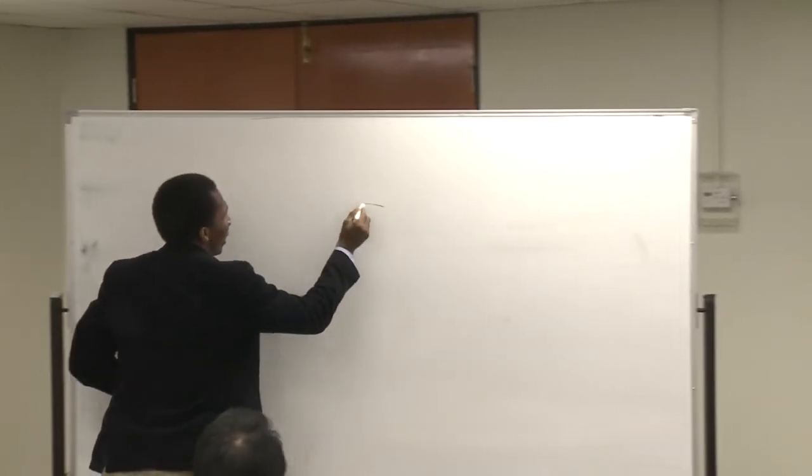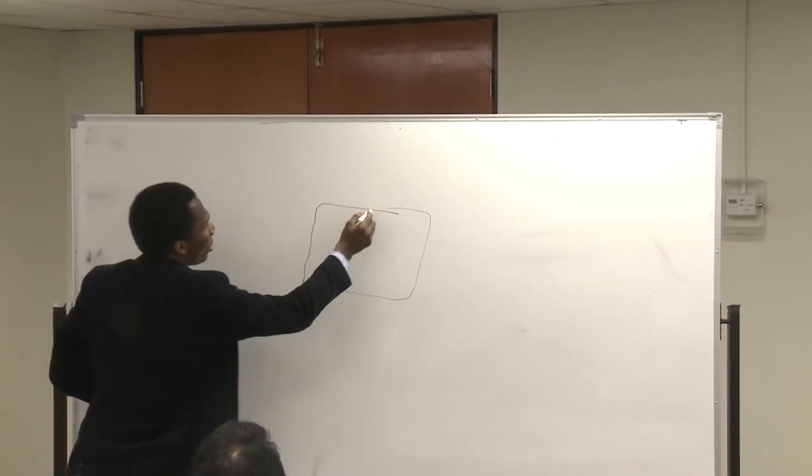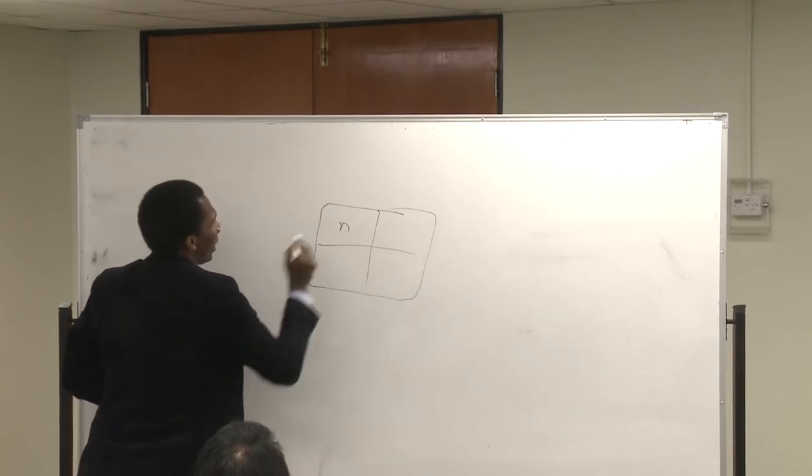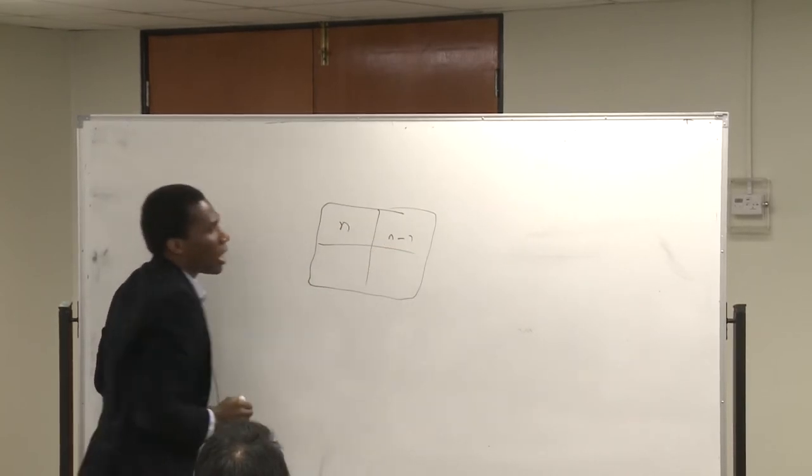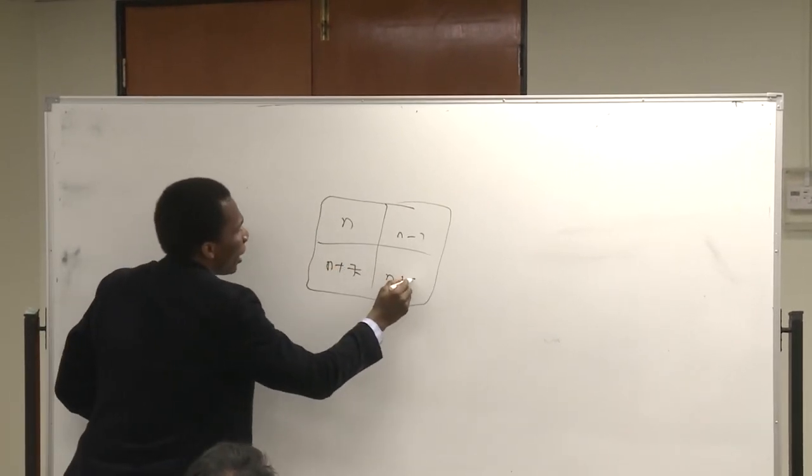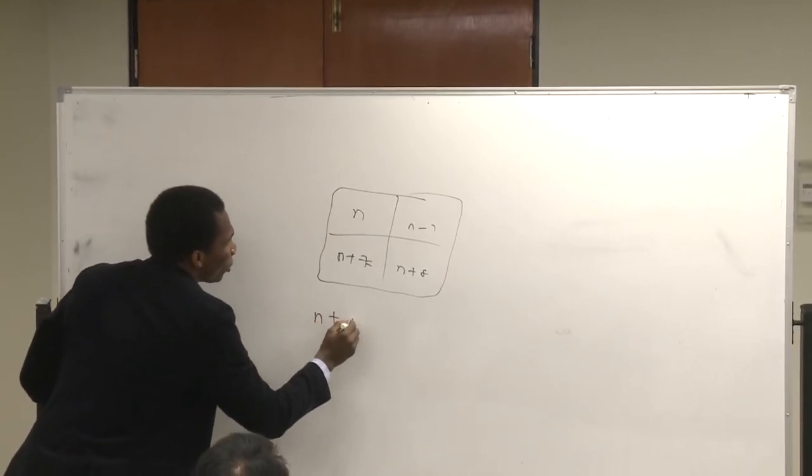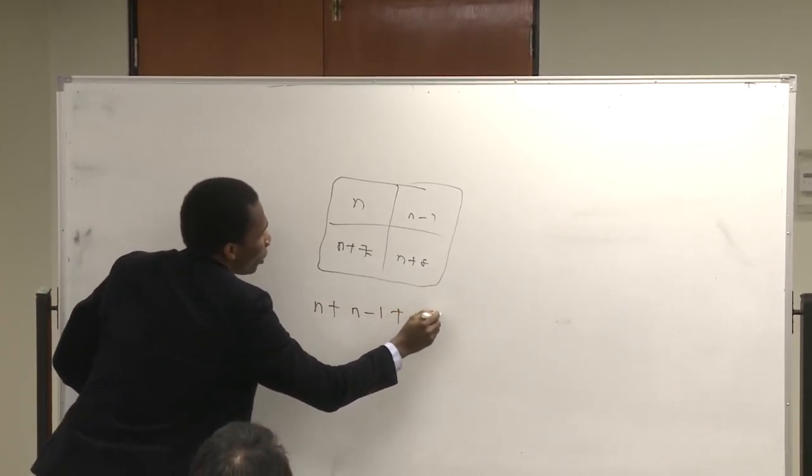What we did is simply, this forms a 2x2 matrix. So the first day, I call it n. The second day is simply n+1. Here is definitely n+7 because we are in the following week. And here we have n+8. Simply, you have given me the sum. All I need to do is to set up a simple algebra of this form.